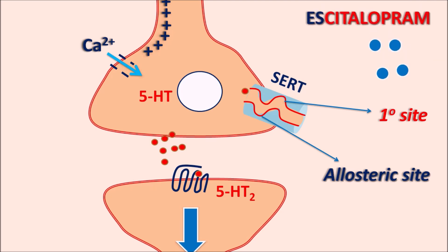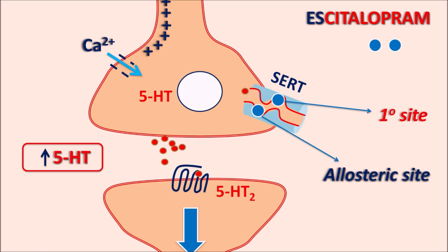Escitalopram inhibits SERT — the serotonin reuptake transporter. This drug binds to the primary site as well as the allosteric site. By binding to both sites, escitalopram can inhibit the reuptake of 5-HT. As a result, 5-HT cannot be reuptaken into the nerve terminal because of this block, resulting in increased 5-HT levels within the synaptic cleft.